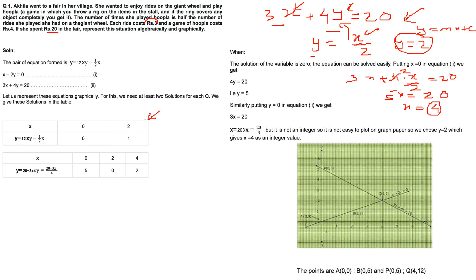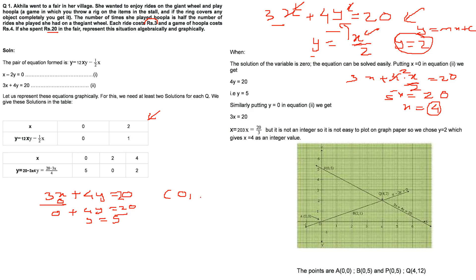To draw a line you need just two points. For the line 3X + 4Y = 20, put X = 0: then 4Y = 20, so Y = 5. That gives the point (0, 5). Now put Y = 0: then 3X = 20, so X = 20/3. That is approximately 6.66, a decimal — it is not easy to pinpoint precisely on a graph.